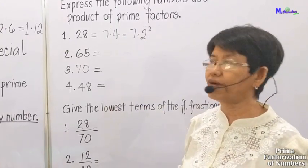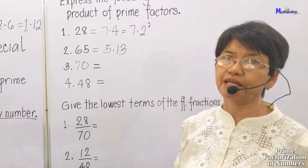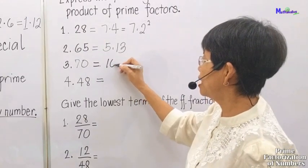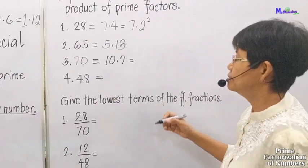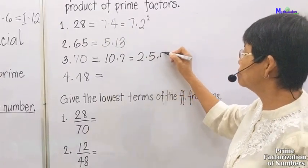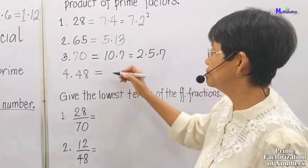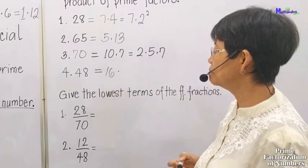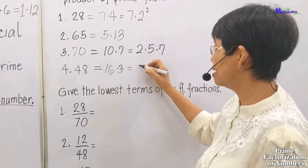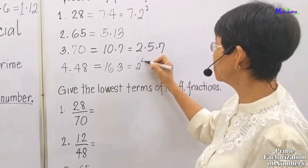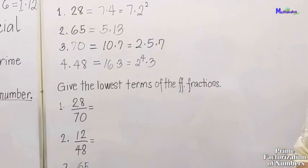The number 70 is 10 times 7, and 10 is still factorable, so you have 2 times 5 times 7. The number 48 is 16 times 3, and 16 can be factored as 2 to the 4th times 3.